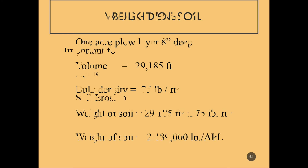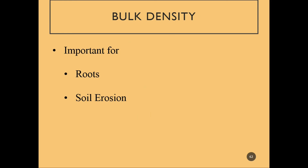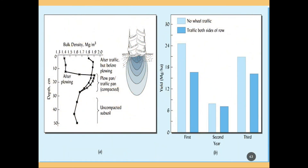Moving soil around is usually pretty impractical. Bulk density can be used in relation to roots and soil erosion. On the left, we see what happens to bulk density after plowing and then with traffic in a field — the compaction force is most felt directly beneath the tires and radiates outward.